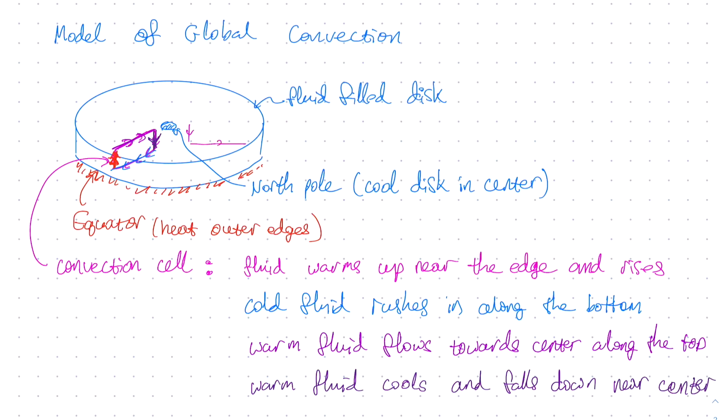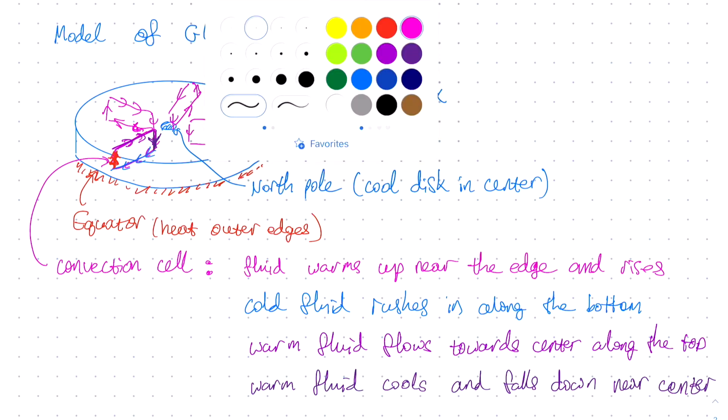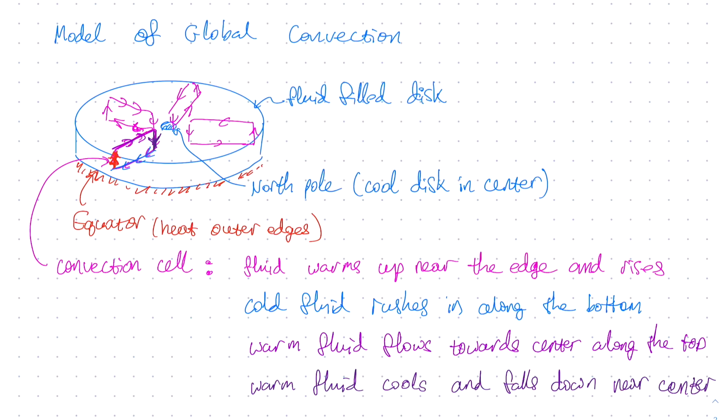In order to make it easier to draw the picture, I drew just one slice of the convection cell. In reality, everywhere in the fluid-filled disk, towards the middle of the disk, the fluid is sinking, flowing down. Towards the bottom of the disk, the fluid is flowing outwards. Towards the top part of the disk, the fluid is flowing inwards, and around the outer edges of the disk, the fluid is flowing upwards.